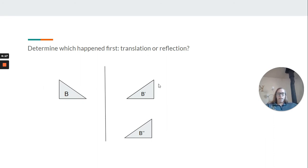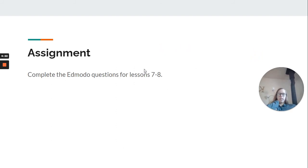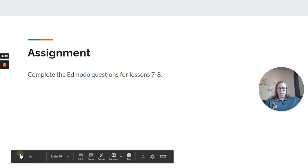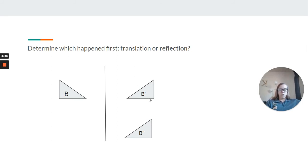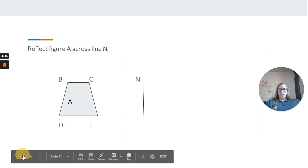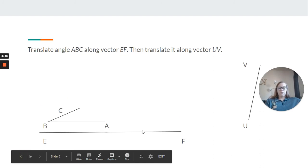So here we reflect, and then we translate. So reflection happened first in this case. Your assignment is to work on the Edmodo questions for lessons seven and eight. A lot of it is going to be just what we just looked at, which one happened first, the translation or the reflection. You're going to want to look first, where the reflection is, but also at those hash marks.